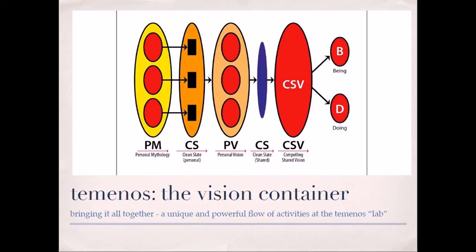Once the container has a shared vision, it's pretty simple after that. It's about going into the being and doing of the transformation project. You see here the actual temenos lab with its layers of influence maps starting from personal mythology, clean slate, personal vision, clean slate at a collective level, and then the final compelling shared vision. And here is the model.